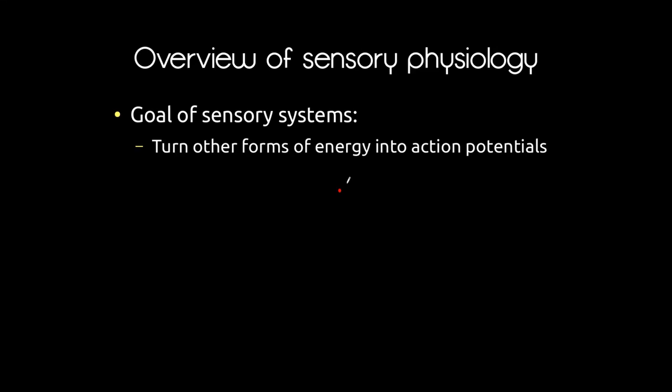Let's take a look at sensory physiology. Really, sensory physiology is just an extension of nervous system physiology. Let's look at some of the basic concepts for now, and then we'll move on to the particular different types of sensory systems. The goal of sensory systems is to turn other forms of energy and information into action potentials.